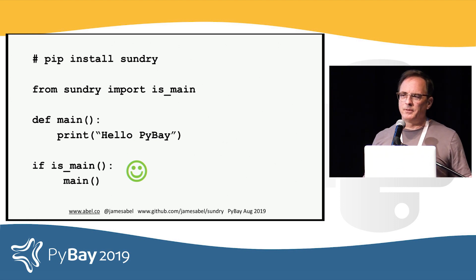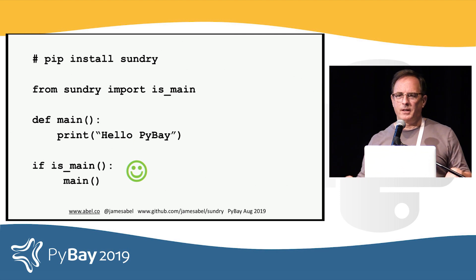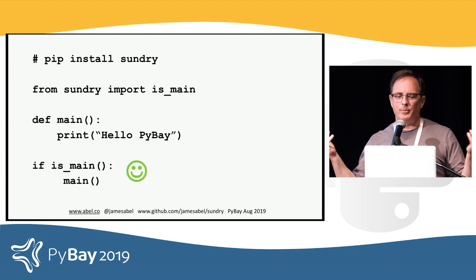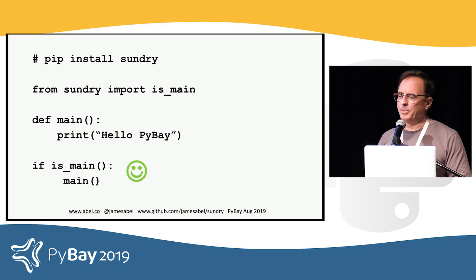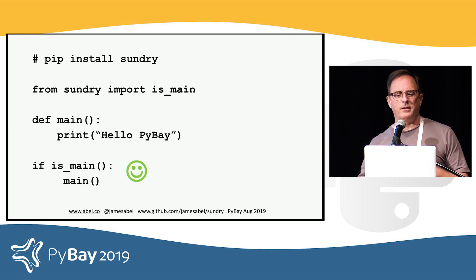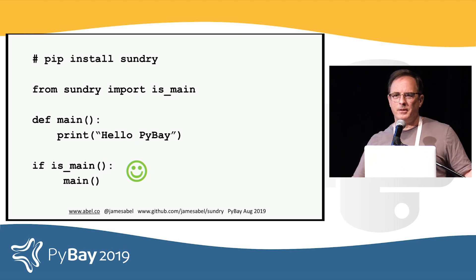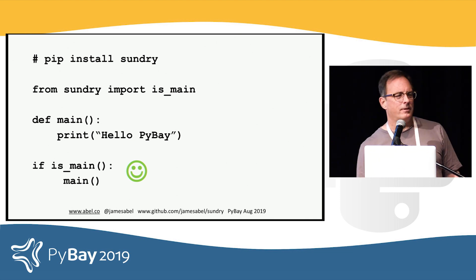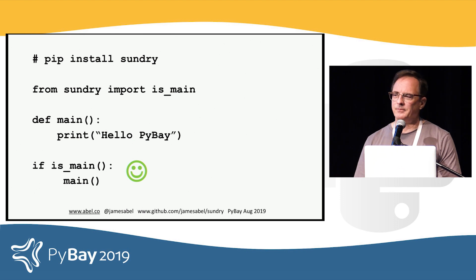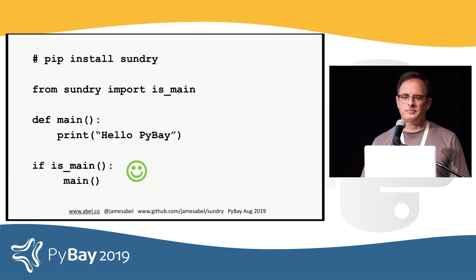And if you don't really want to type that piece of code into your own code, I've already put a package — a library I call sundry — up on PyPI. So just `pip install sundry`, do `from sundry import is_main`, and you've got something that looks a little bit better than what we've had until now. That's it. Thank you very much.